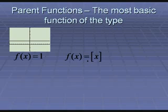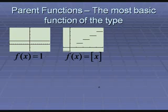The next parent function is the greatest integer function, also called the floor function, where you're rounding down. We remember what it looked like. Someone asked what it would look like on a calculator — there it is. You can graph it; it's those steps.